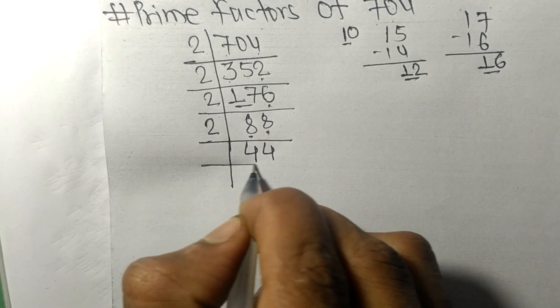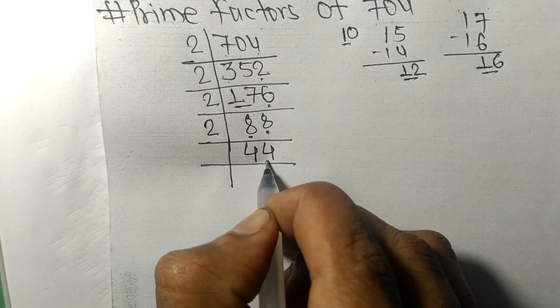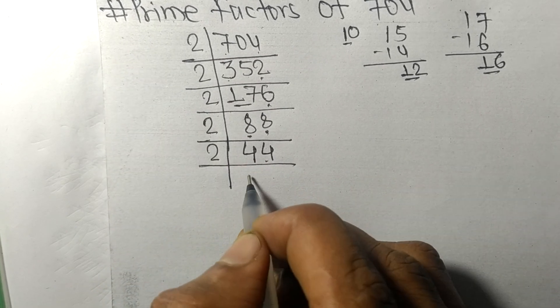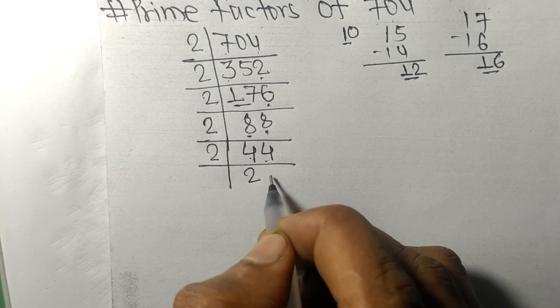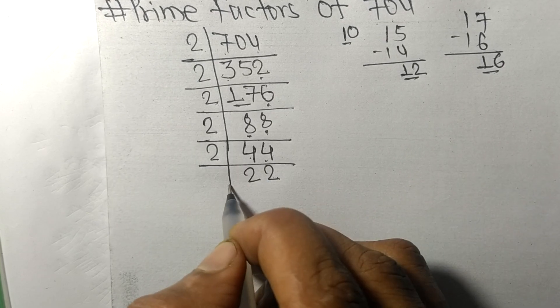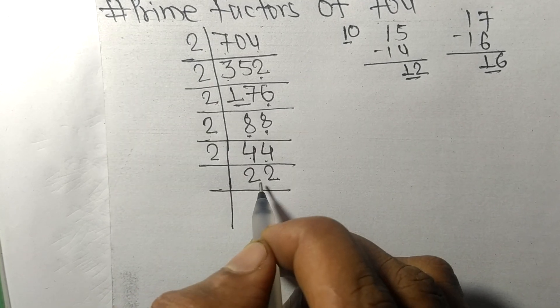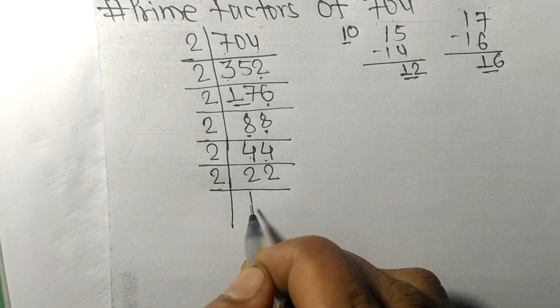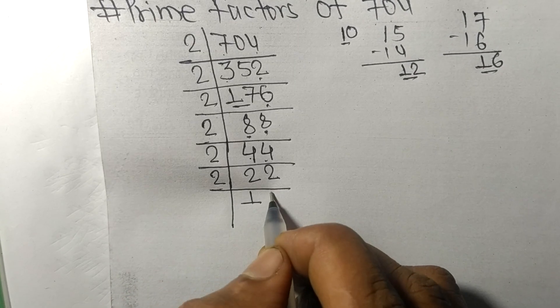Again even number 2 at last, so divisible by 2. 2 times 1 mean 2, 2 times 1 mean 2. So now we got 11, which is divisible by 11.